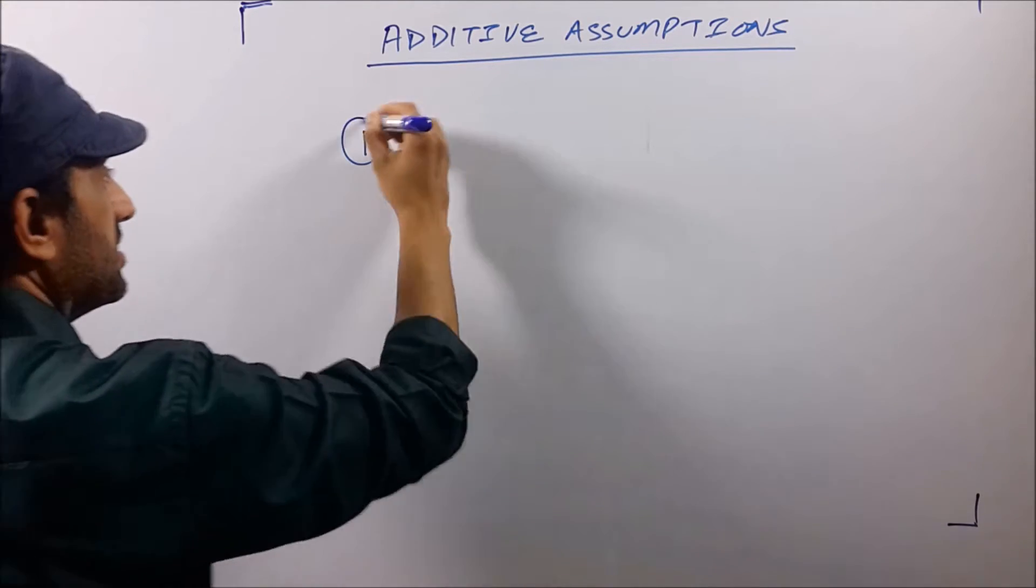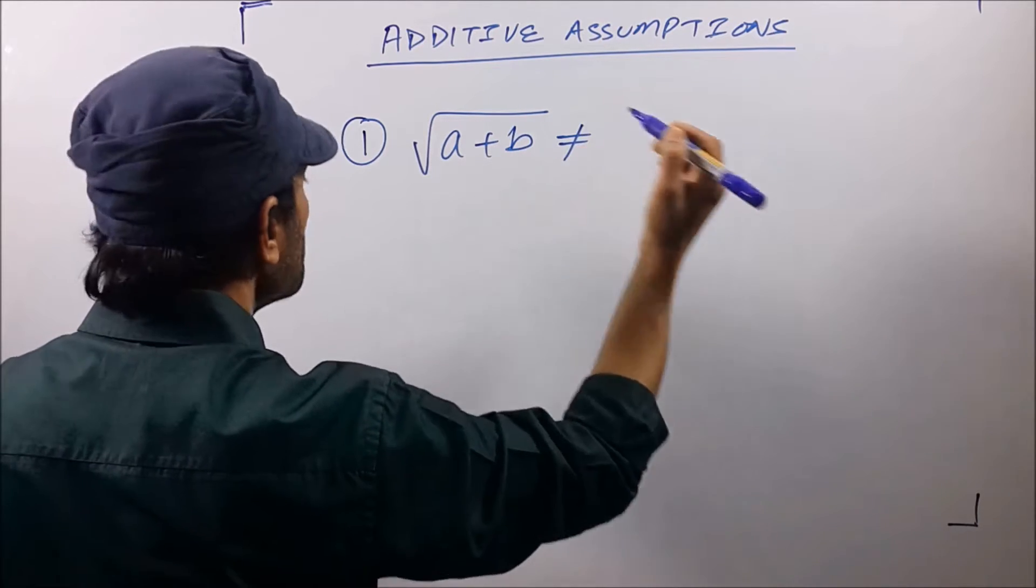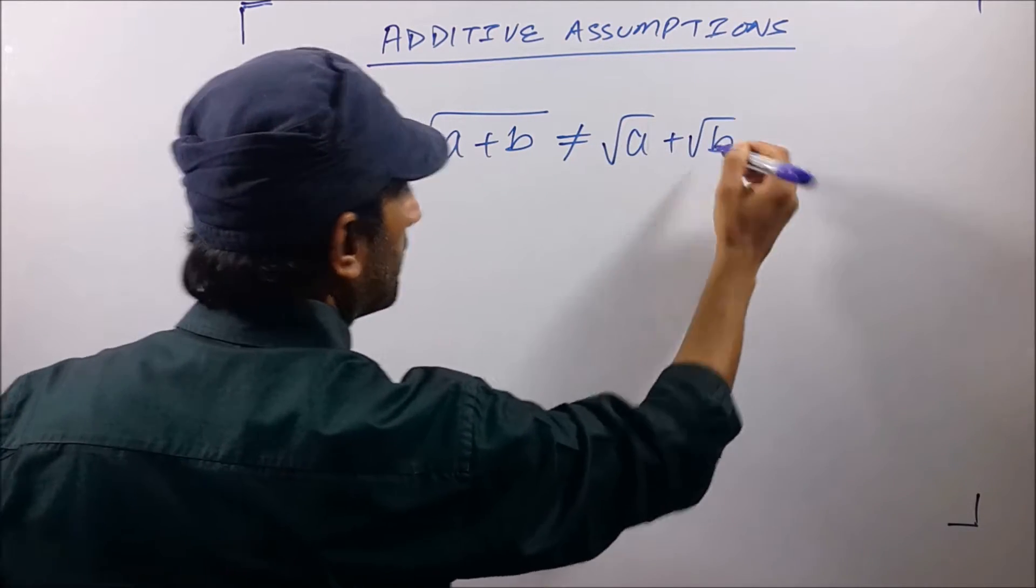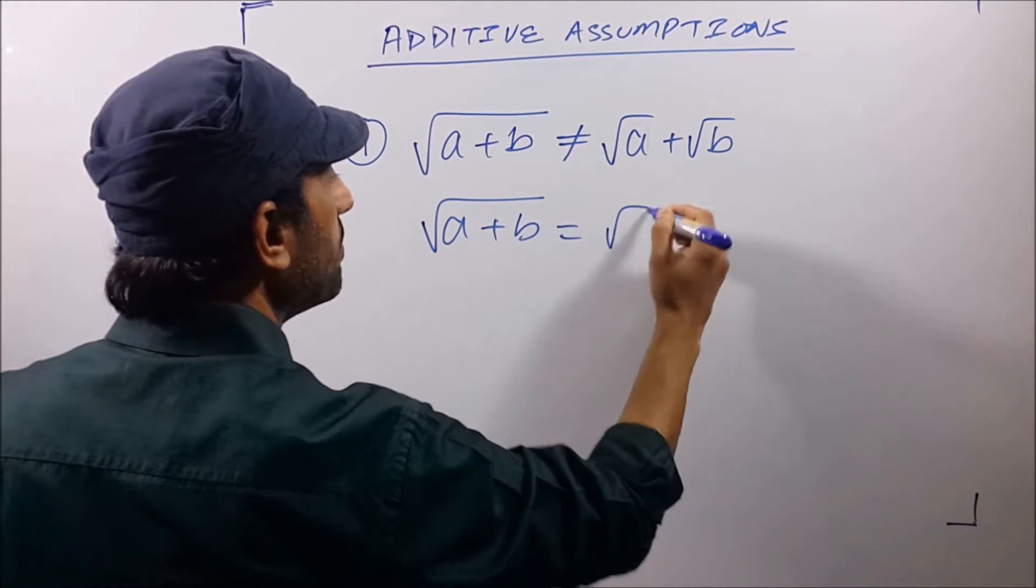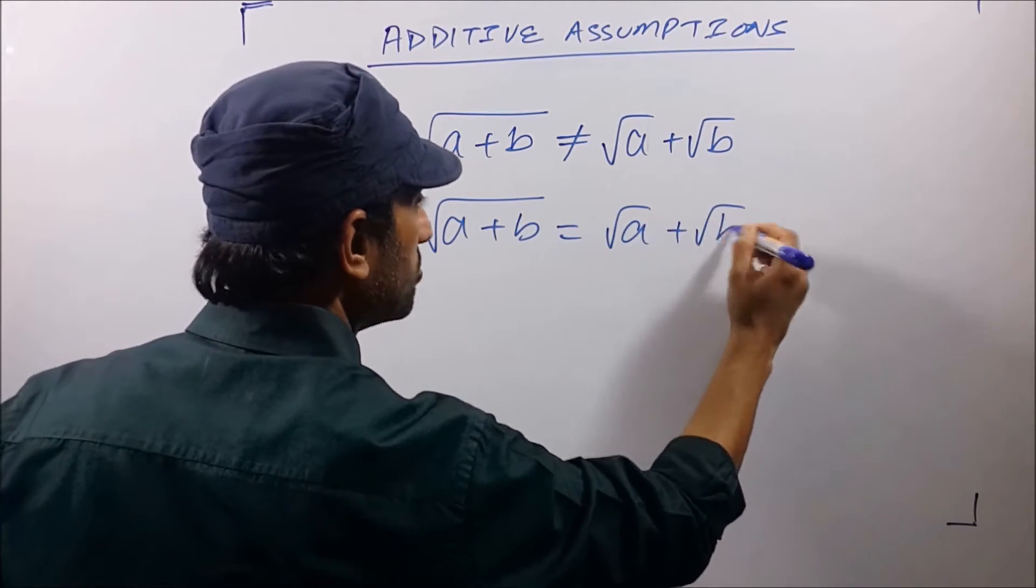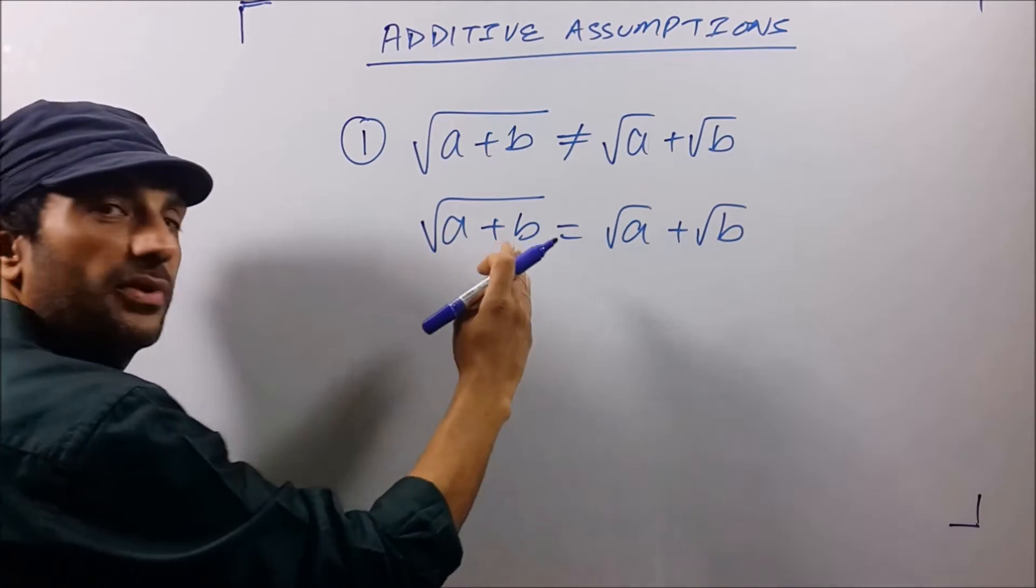The first is √(a+b) and this is not equal to √a + √b. But many write √(a+b) = √a + √b because they take these two terms as two separate terms.